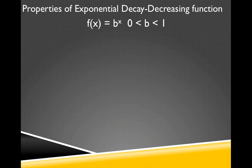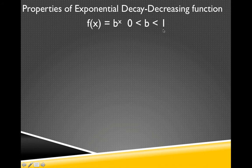Let's look at the properties of exponential decay, or the decreasing function. f of x equals b to the x — it's the same function, but this time b, our base, is going to be a number between 0 and 1, a proper fraction or a decimal with a leading 0, like 0.25.